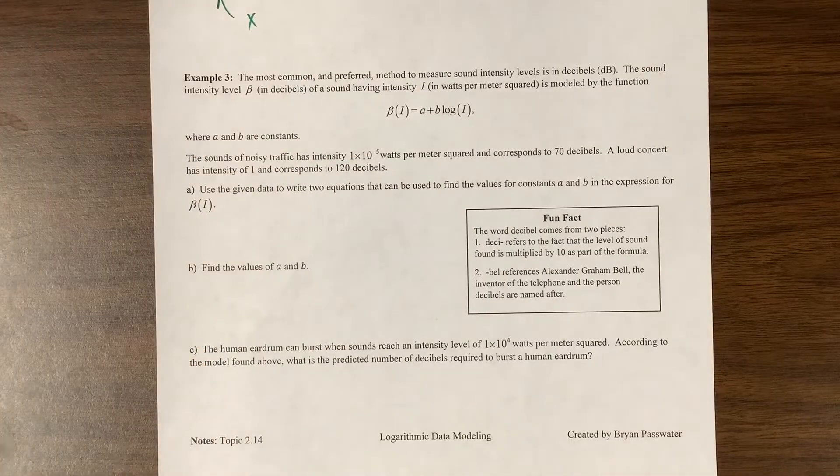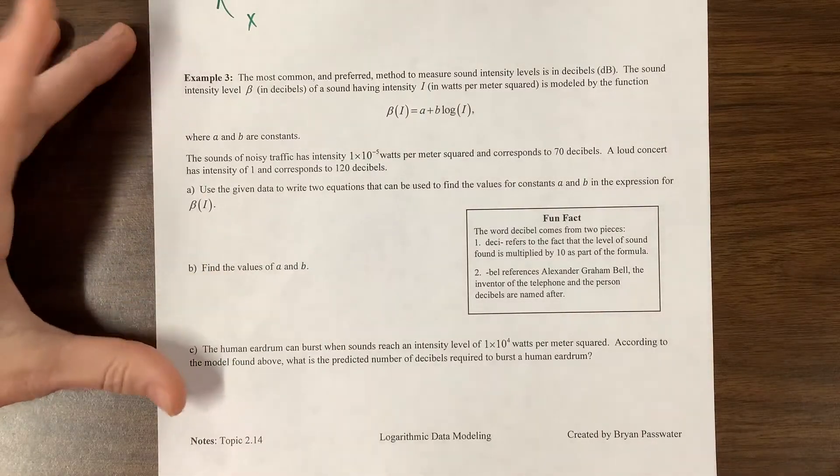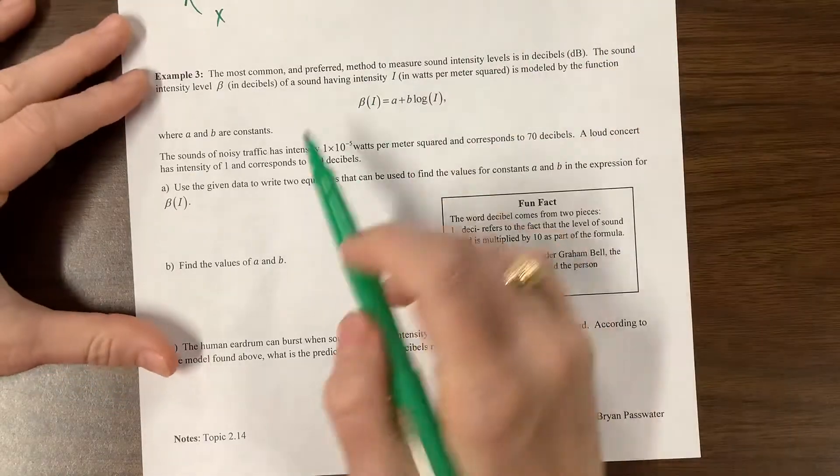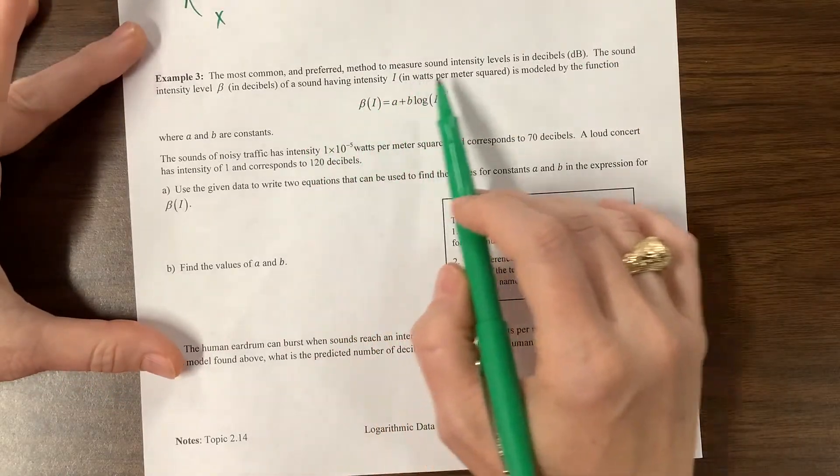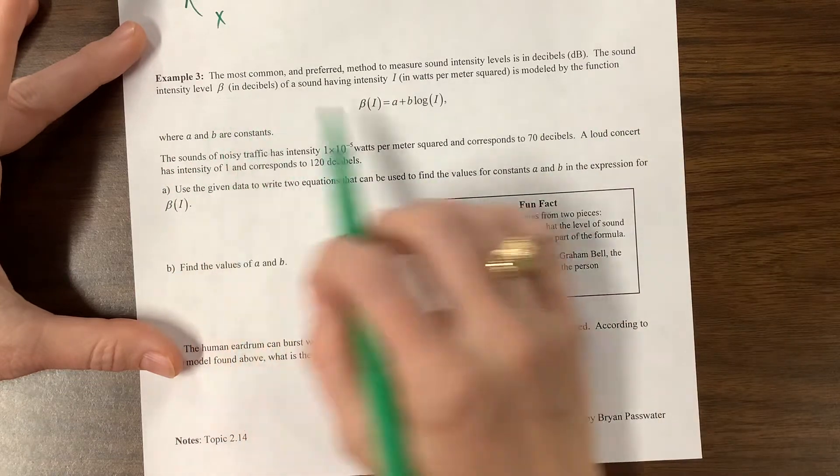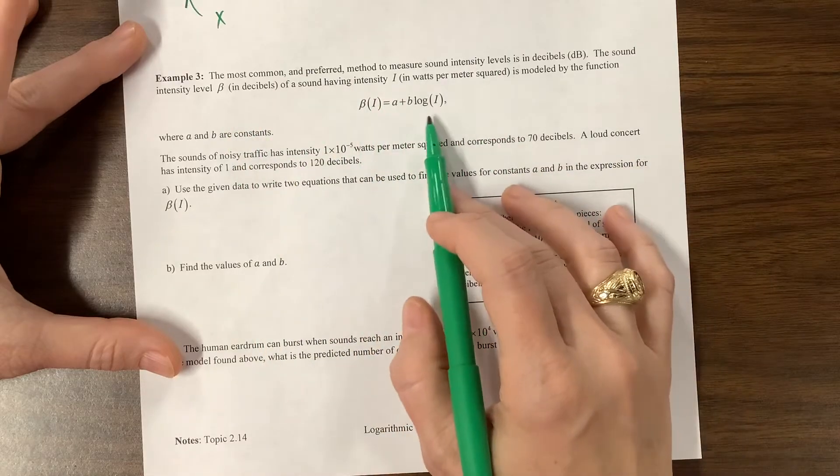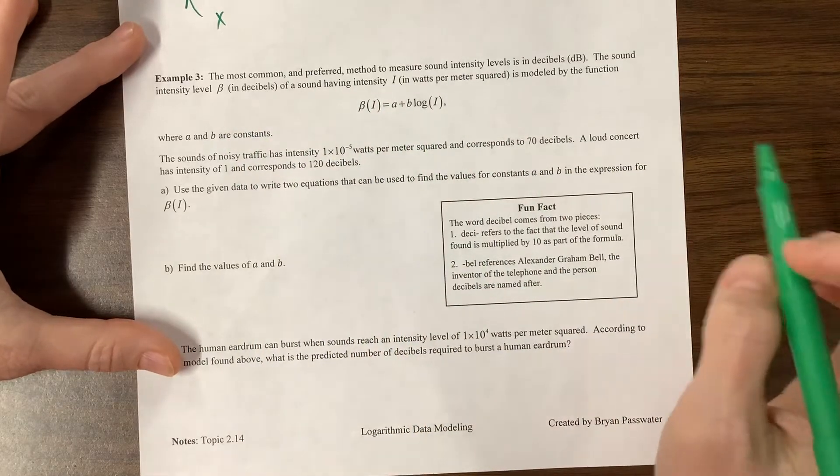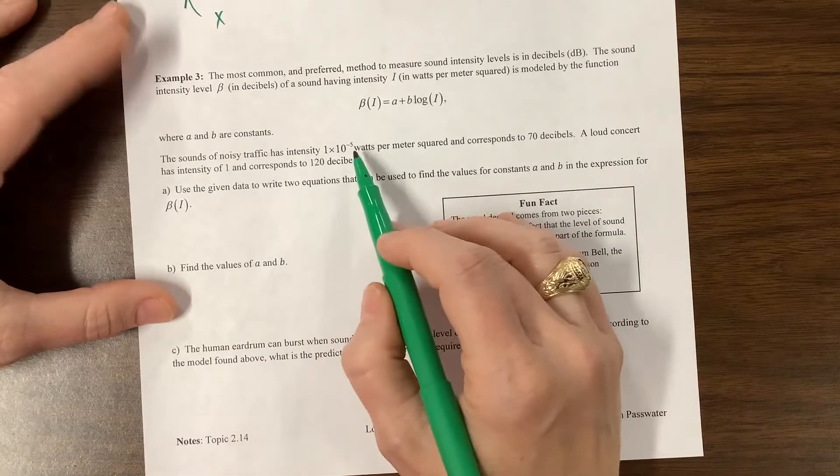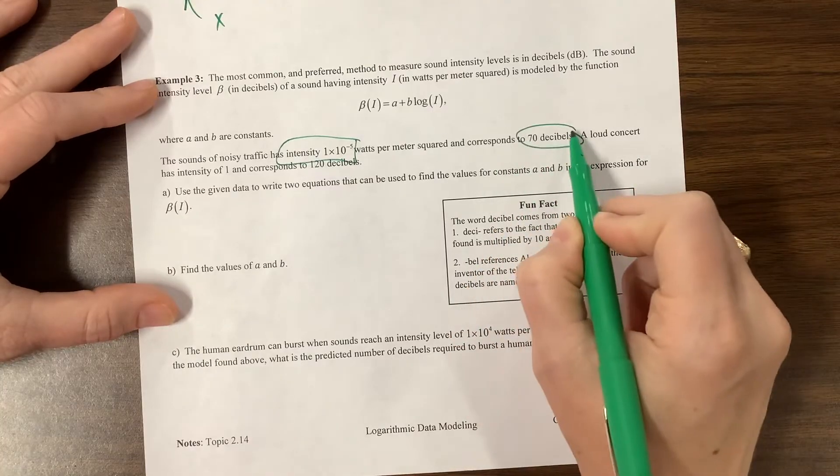So here's our last example. This one, when I worked it at first, it made me think a little bit because the trick is trying to keep all the variables straight. That's what I found. So the method to, we're measuring the intensity of sound in decibels. So the intensity level, this decibel right here, the decibels have a sound intensity in watts, I guess. This is not an area that I know a lot about. The sound of noisy traffic has an intensity of this.